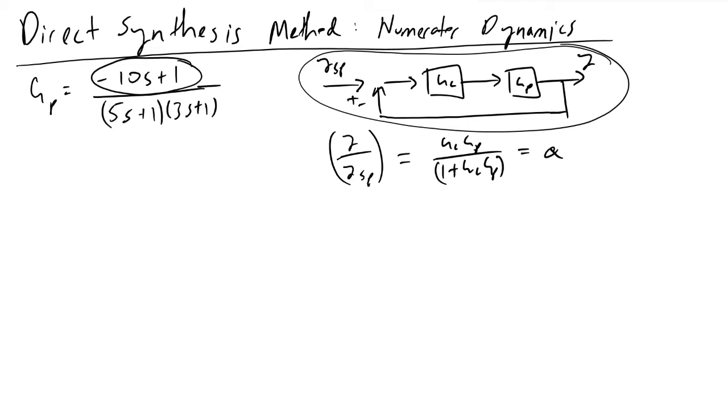The first thing to do is solve for gc as some function of alpha. To do that, we'll have 1 plus gc*gp over gc*gp is equal to 1 over alpha.